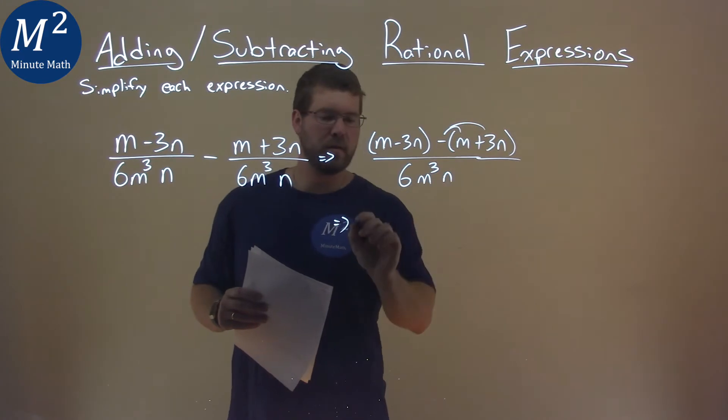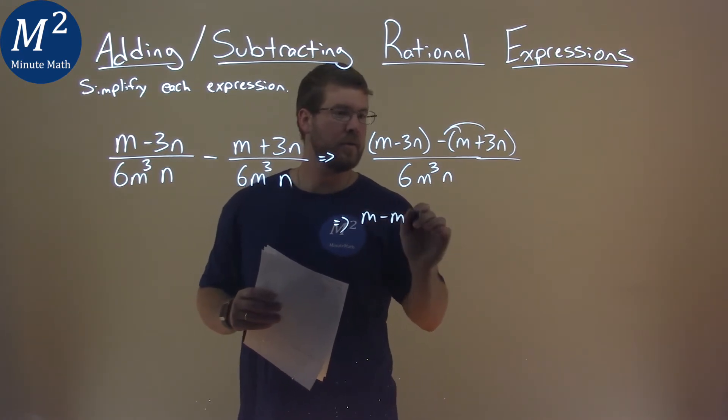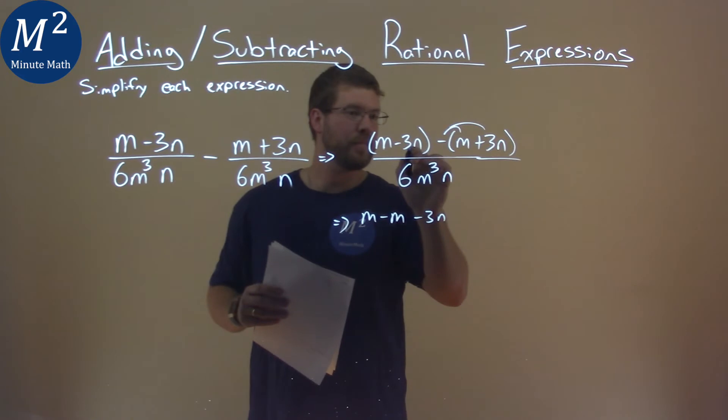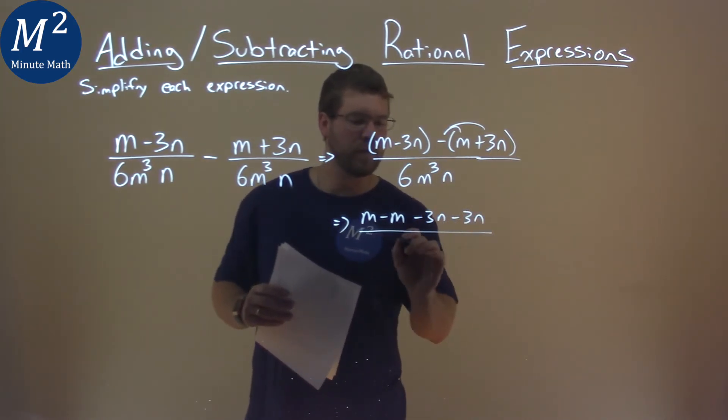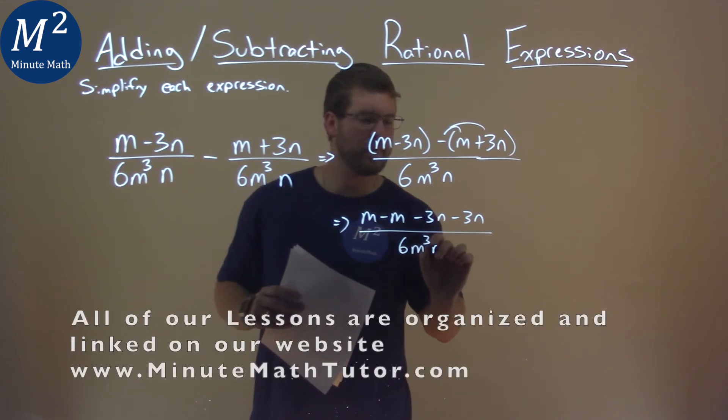So we have m minus an m here, then we have a minus 3n here, and then a minus 3n. And that's going to be over a 6m to the third power n.